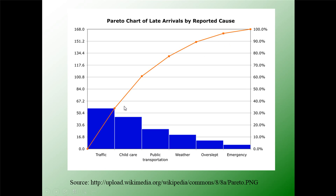In addition on this chart, there's the cumulative distribution plotted. For example, the top two causes account for about 60% of the late arrivals. The top three causes approach about 78%, and so on. This line is simply the cumulative distribution of the causes.